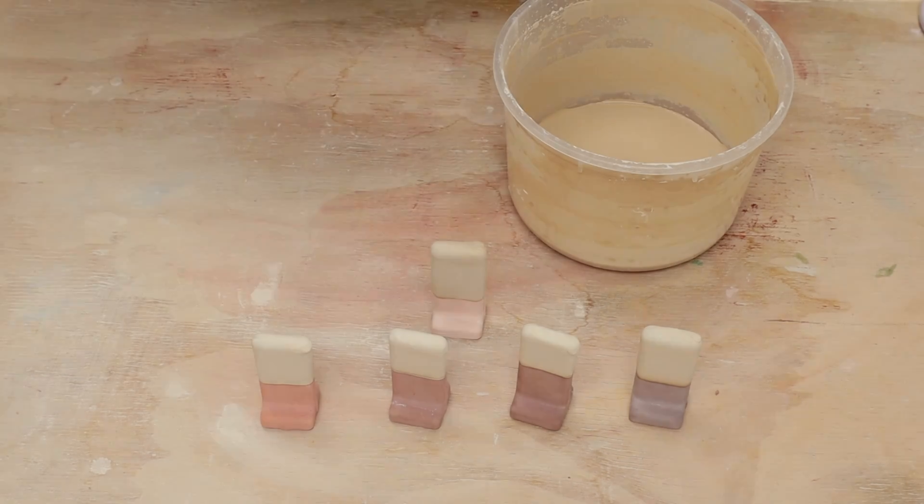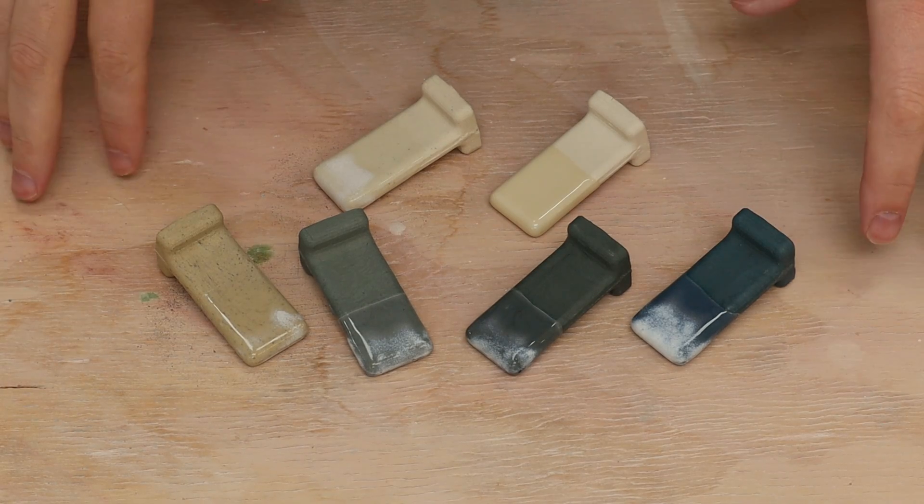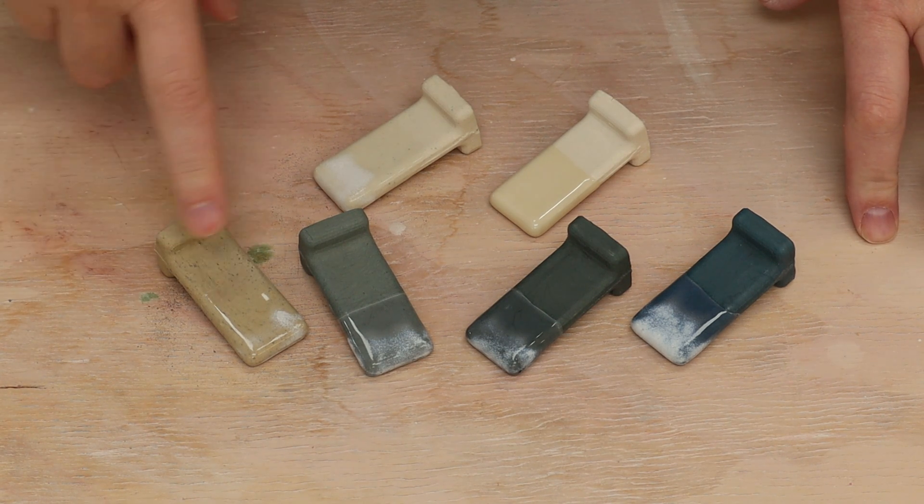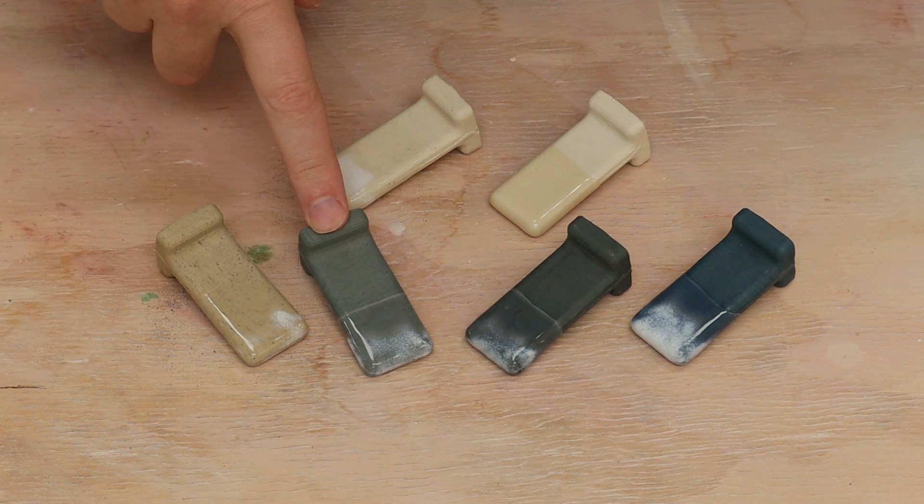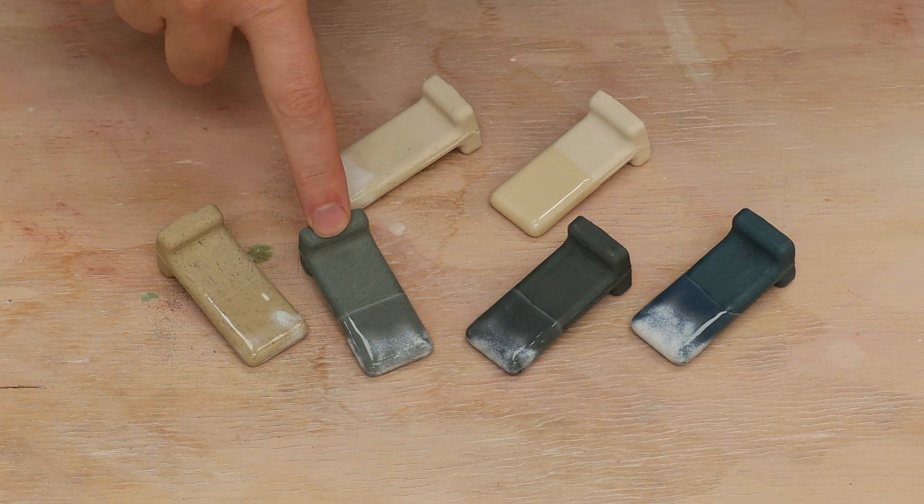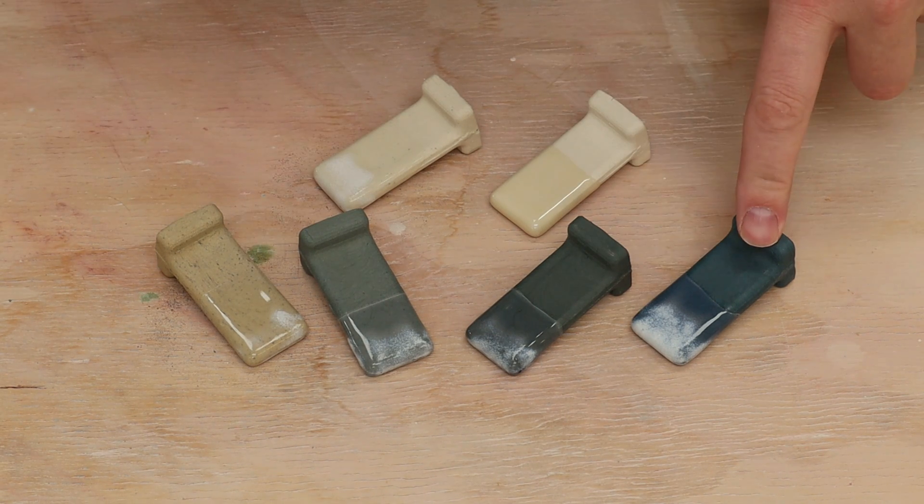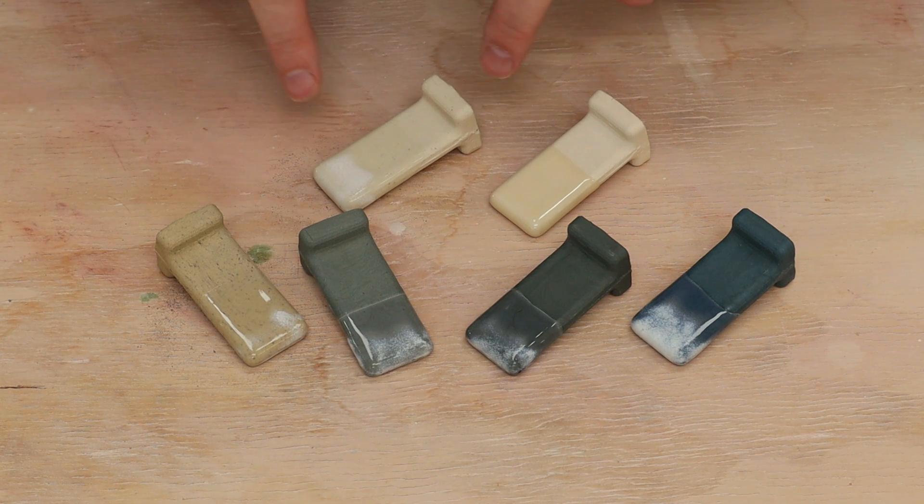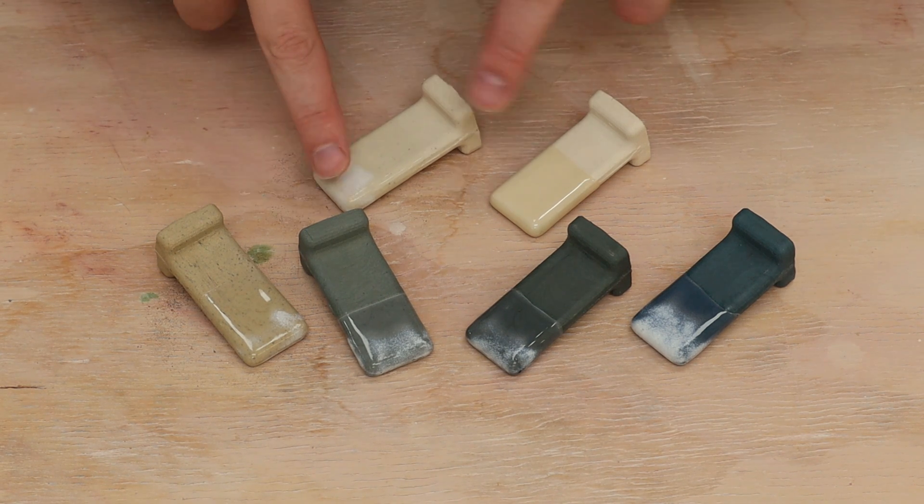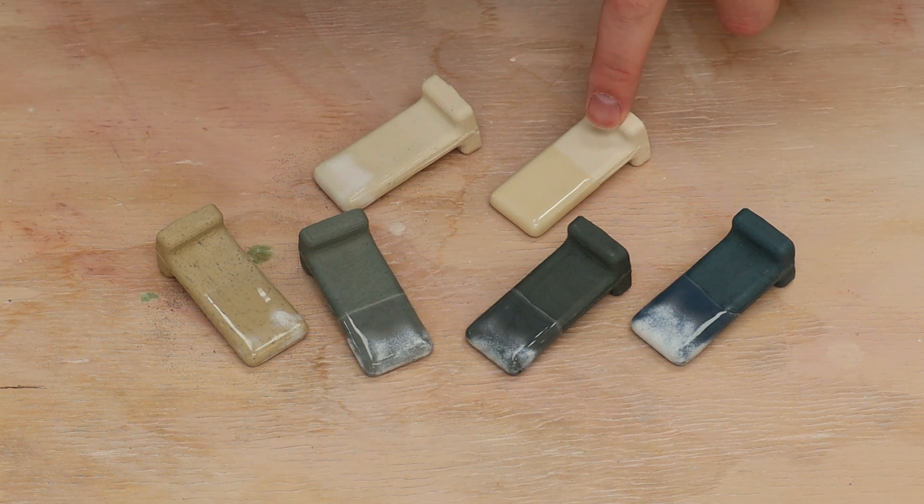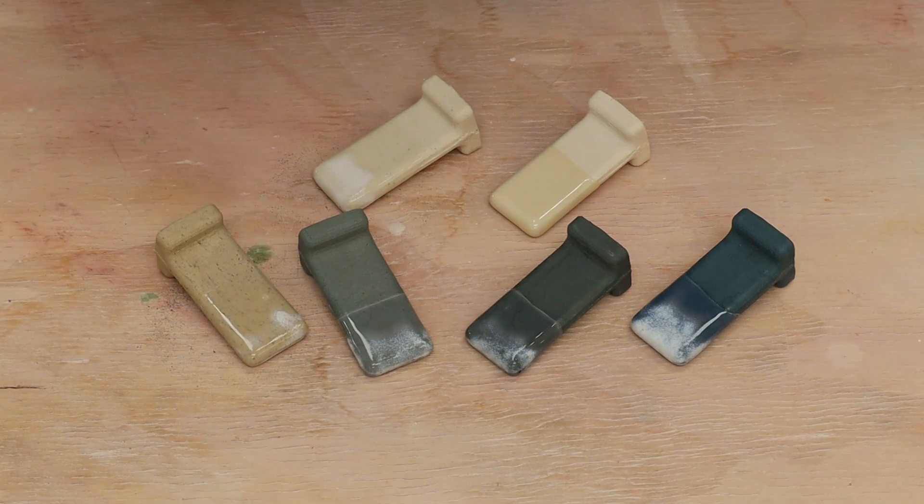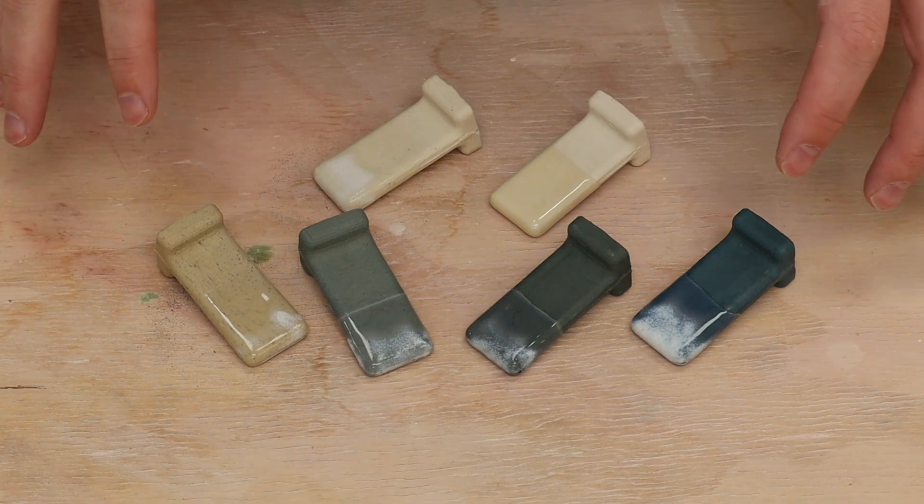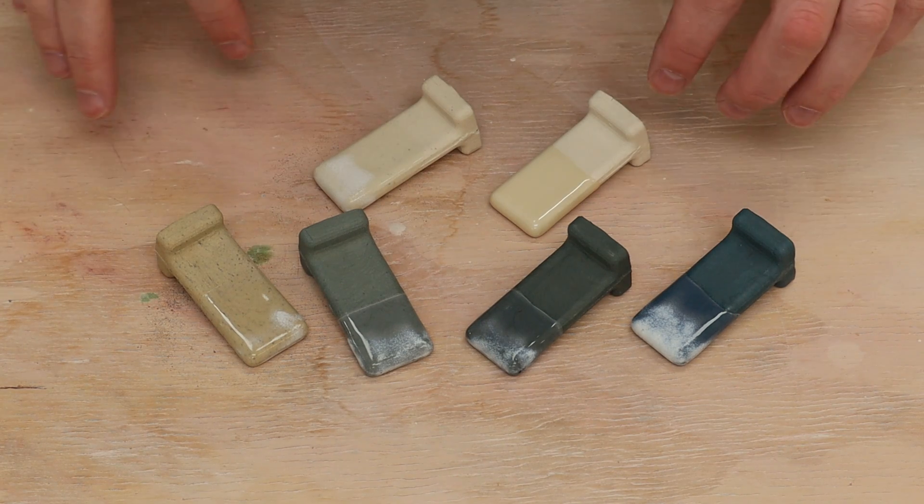Here are the results of the test firing. This one is just the iron oxide, this is one part of the cobalt to nine parts of the iron, two to eight, and three to seven. And then hanging back here is the lower percentage of just iron, and I have a reference test tile just for comparison. So you tell me what do you think, which of these do you like the best?